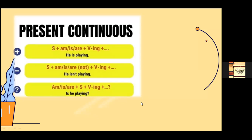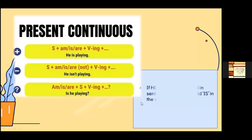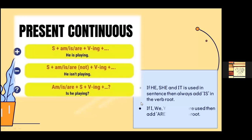The same rule applies: use 'is' when representing a singular person, and use 'are' when representing multiple people.